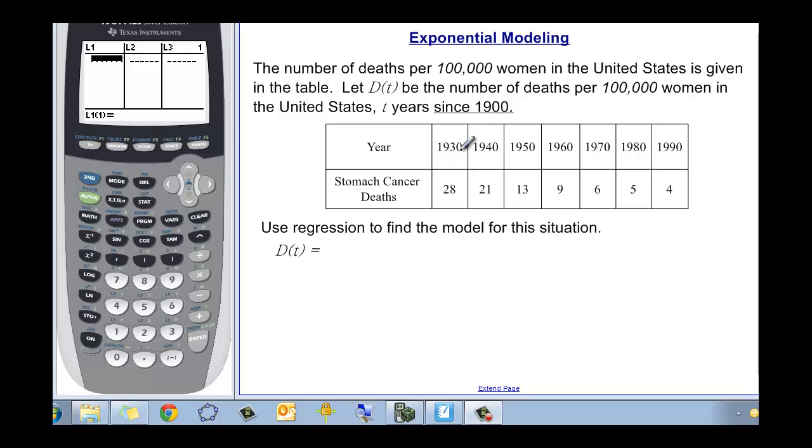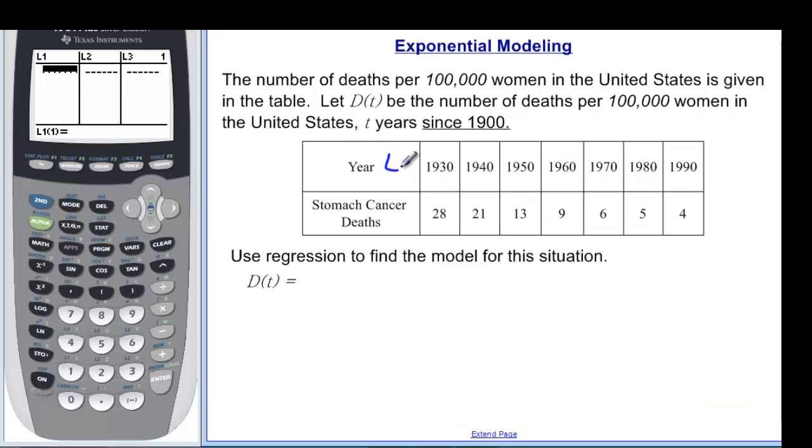So we have 1930 and its number of deaths and so on. This is going to be my L1, and L1 are going to actually be 30 because it's 30 years since 1900, 40, 50, 60, 70, 80, and 90.